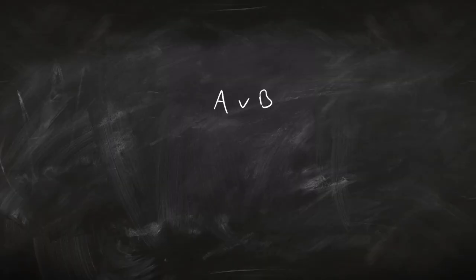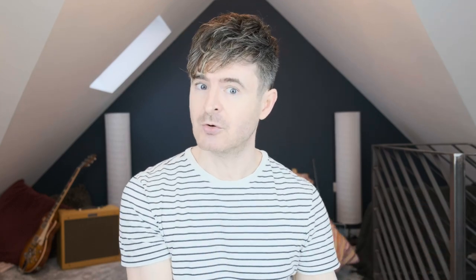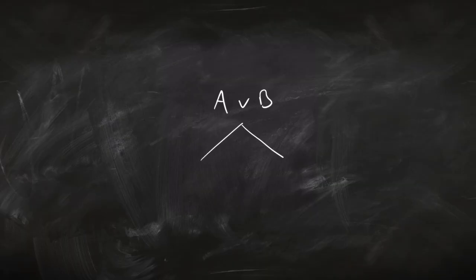What about disjunction, A or B? This one's a bit different, because if you know that A or B is true, you don't know which one's true. So here's what you do: you split your branch into two. You have a left branch and a right branch, and you have A on the left and B on the right. Again, you tick that disjunction off to say: I'm done with that, I'm not going back to it.